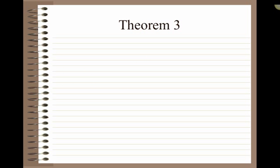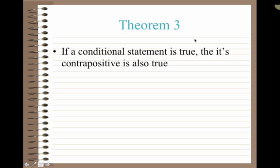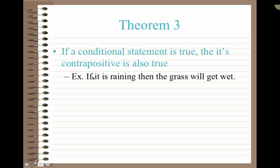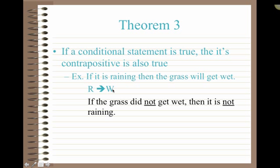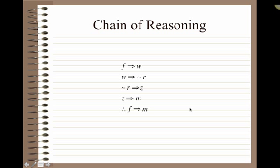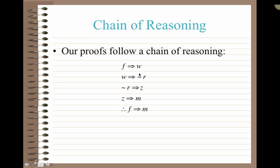Okay. A useful theorem for us in our proofs would be theorem three. It states if a conditional statement is true, then its contrapositive is also true. Let's take a look at an example. Suppose our conditional statement was, if it is raining, then the grass will get wet. Pretty true. And we could abbreviate it as r implies w. Raining implies wet. The contrapositive is formed by flipping the order of the hypothesis and the conclusion, and negating both. So, the contrapositive would read, if the grass did not get wet, then it is not raining. And that's also true. This is useful because as we try to create a chain of reasoning in our proofs, we're sometimes going to want to use one form of a statement, and sometimes we'll use its contrapositive.